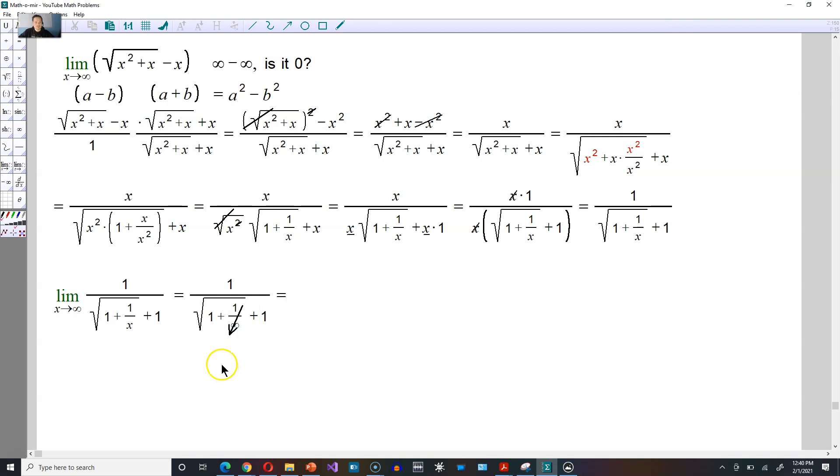So let me strike it away, this part. Because it's 1 over infinity. Which means all that is left over in this position is 1 over the square root of 1 plus 0 and then here plus 1. So work this out. It's going to be 1 over the square root of 1 plus 1 which is then 1 over 1 plus 1.